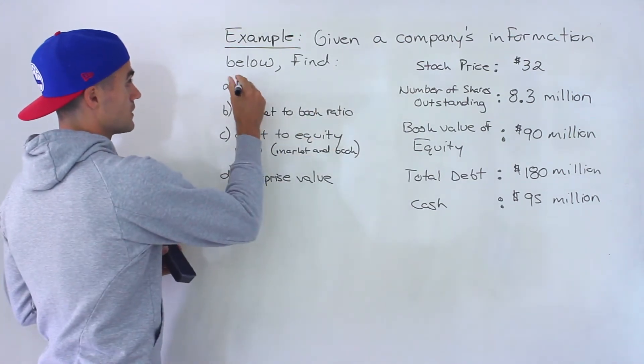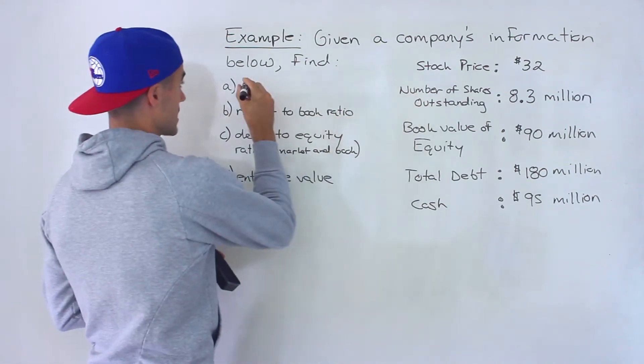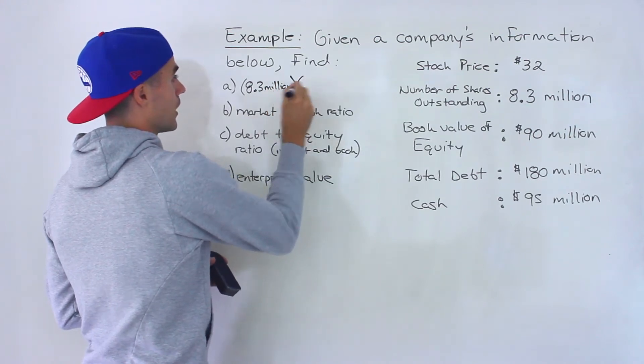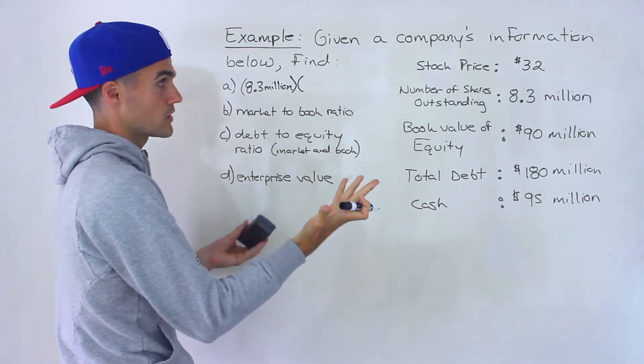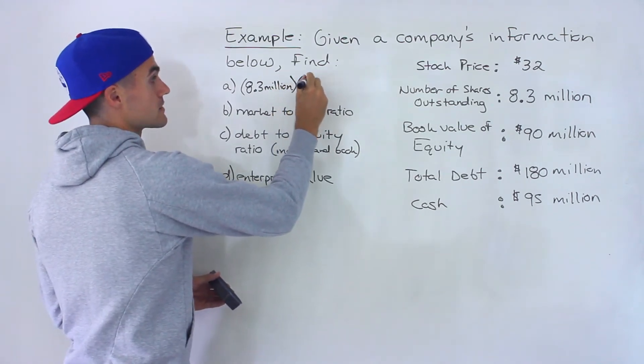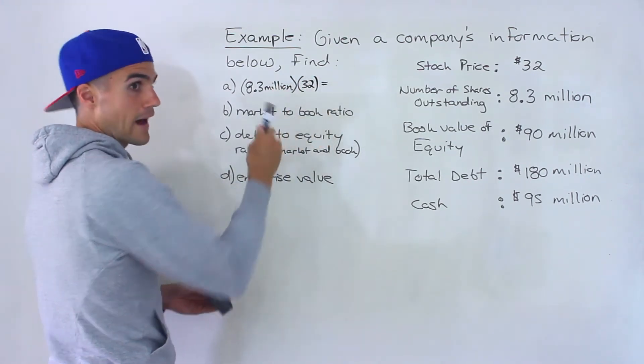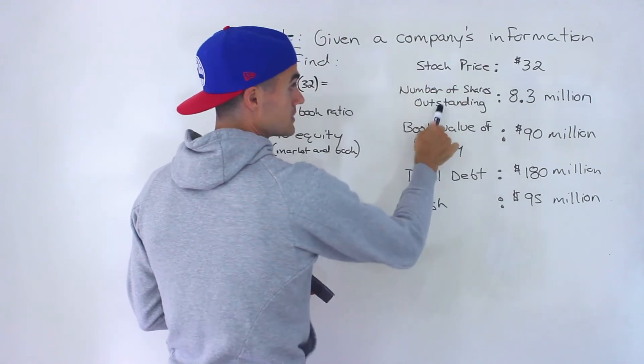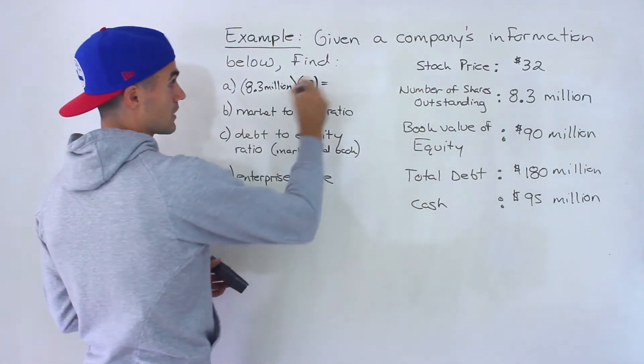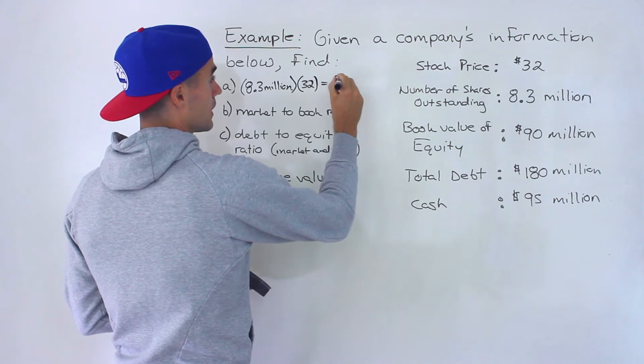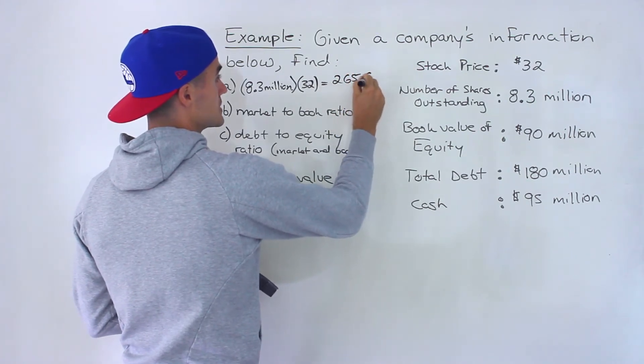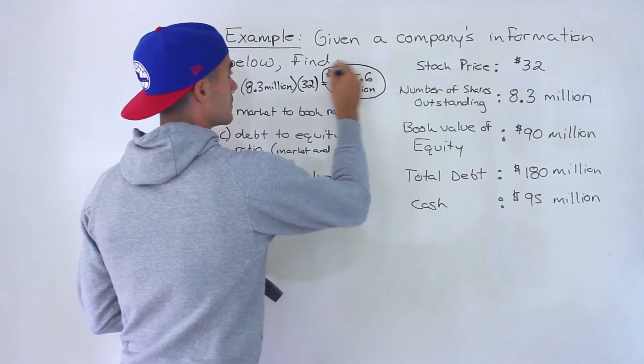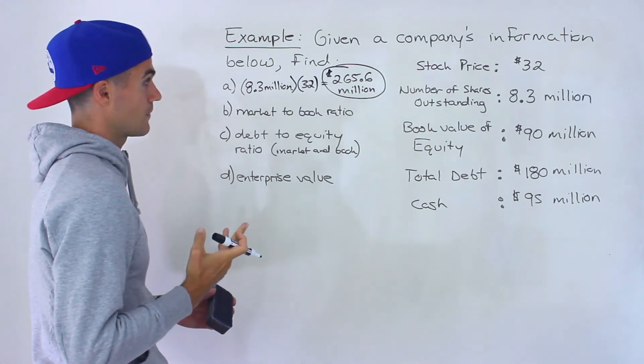And the way we can do that is we would take the total number of shares outstanding, 8.3 million, and multiply it by the market share price or the stock price, which is given as 32. So that would give us the market value of the equity, what it's trading at per share in the market times the number of shares outstanding. And when we do that calculation, we end up getting 265.6 million dollars. So that would be the answer to number one. That's what the market cap is going to be.